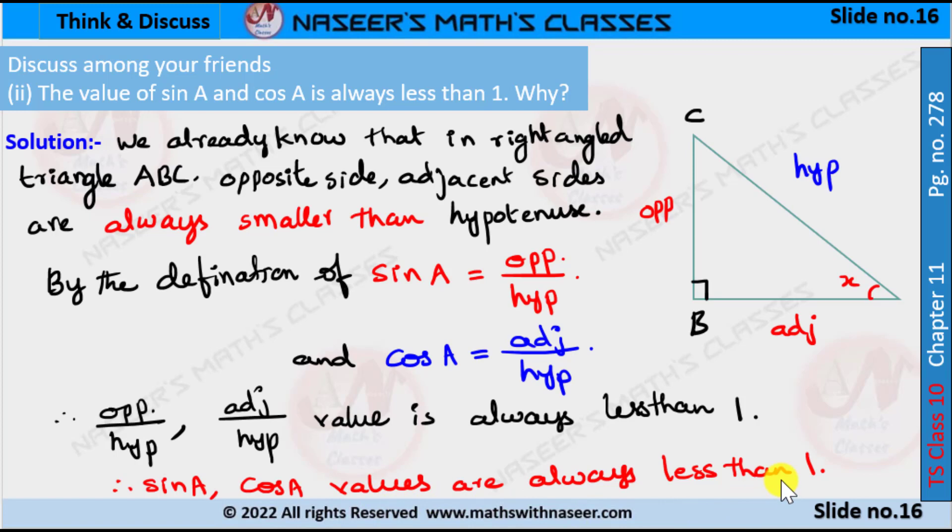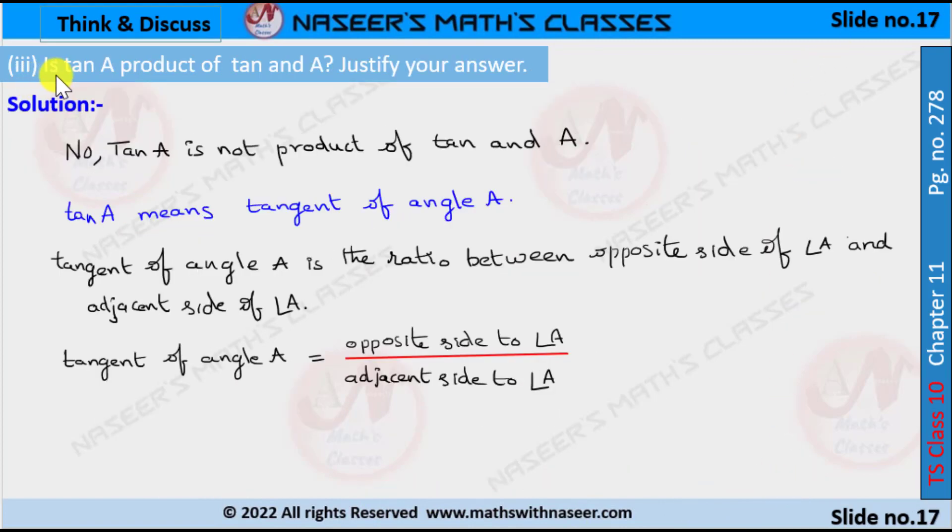Third one: Is tan A product of tan and A? Justify your answer. No, tan A is not a product of tan and A. tan A means tangent of angle A.